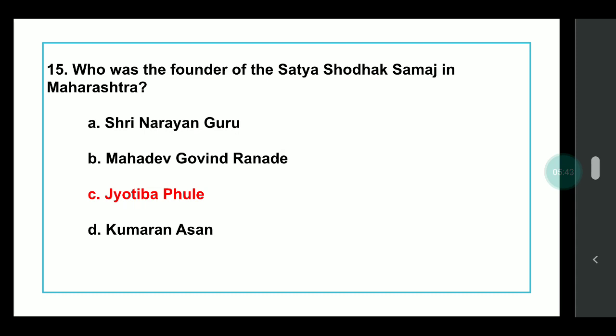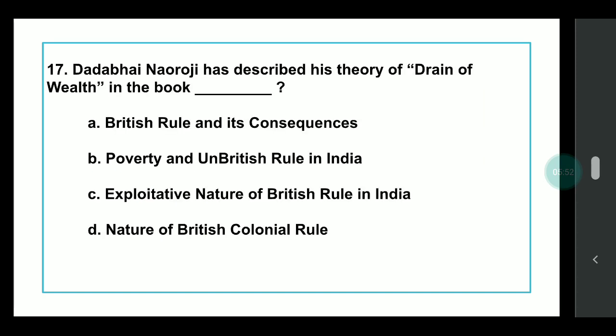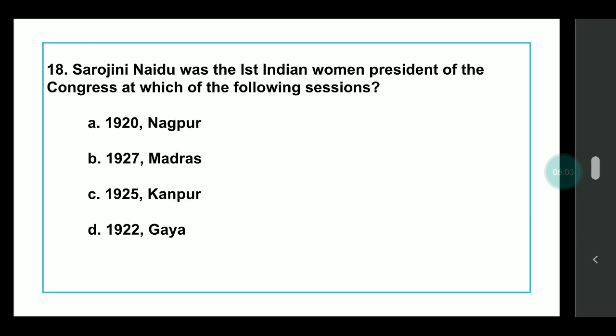Q16: Who established the Atmiya Sabha? Answer: It was established by Raja Ram Mohan Roy. Q17: Dadabhai Naoroji described his theory of drain of wealth in which book? Answer: He wrote it in the book 'Poverty and Un-British Rule in India.'